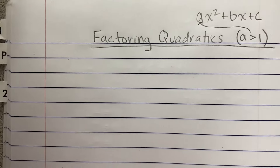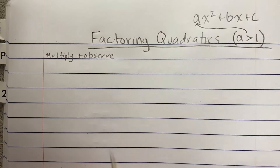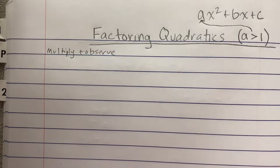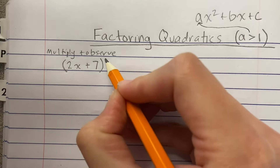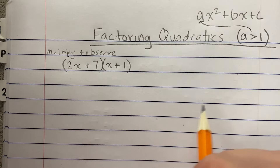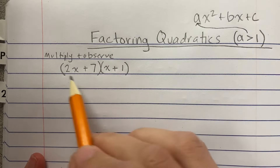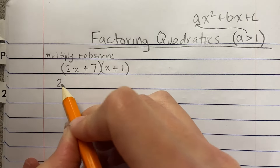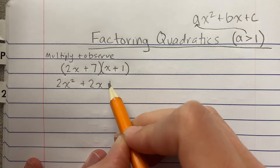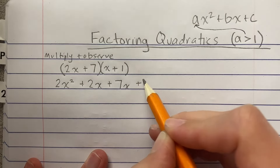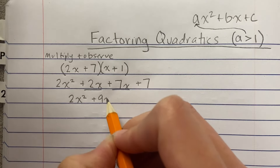We're going to start with the opposite of factoring, which is multiplying, so we can observe what happens. Please follow along with me — make your notes look just like mine, because I'm going to keep referencing back to this. So: 2x times x gives 2x², 2x times 1 gives 2x, 7 times x gives 7x, and 7 times 1 gives 7. Combining like terms, we get 2x²+9x+7.